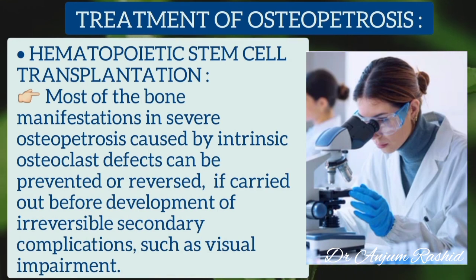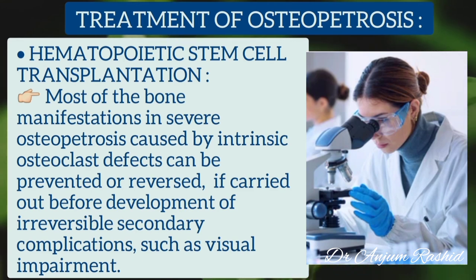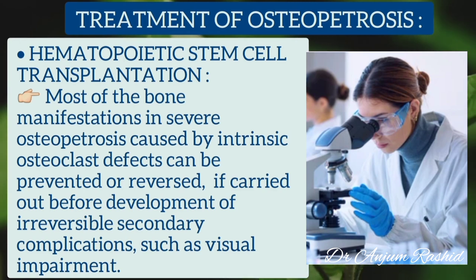Most of the bony manifestations in severe osteopetrosis caused by intrinsic osteoclast defects can be prevented or reversed by hematopoietic stem cell transplantation, if carried out before the development of irreversible secondary complications such as visual impairment.